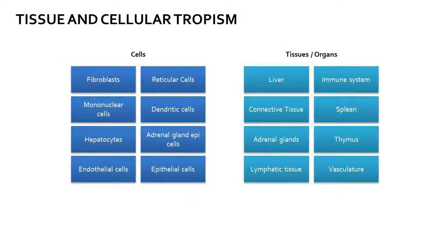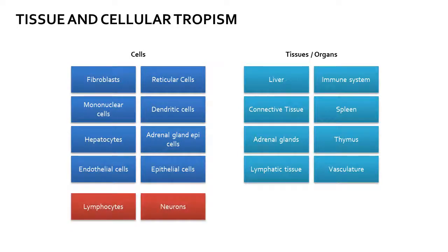The Zaire Ebola virus has a very broad tissue and cellular tropism, infecting many organs and causing significant tissue damage. However, the virus has not been definitively demonstrated to infect lymphocytes and neurons during a normal infection cycle. An interaction with receptors on lymphocytes has been suggested to promote cytokine dysregulation, potentially contributing to virulence and tissue damage.